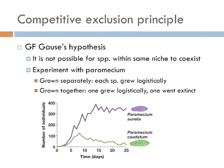In ecology, the competitive exclusion principle states that two species competing for the same resources cannot coexist if other ecological factors are constant. The idea is that when one species has even the slightest advantage over another, the one with the advantage will outcompete and eventually dominate in the long term, leading to either the extinction of the competitor or an evolutionary or behavioral shift towards a different ecological niche.